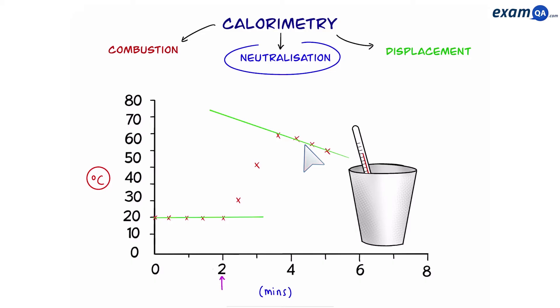Then from the moment that we added the alkali, so in this case two minutes we're going to draw a line up and we're going to extrapolate it and we're going to see where it hits our second green line. From here we're going to look at the y-axis. So this time it shows that the temperature change was from 20 to 70.